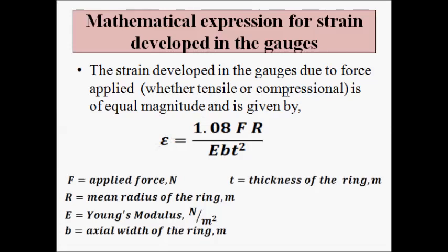This is in contrast to the column type load cell, where the compressional and tensile strains had different magnitudes. In the proving ring type load cell, the tensile and compressional strains have equal magnitude — which is an interesting characteristic worth noting.